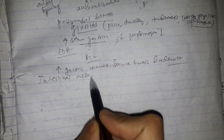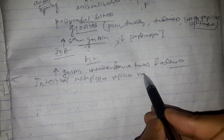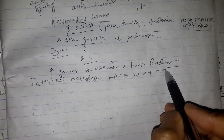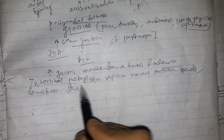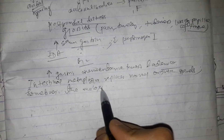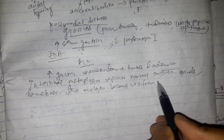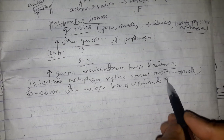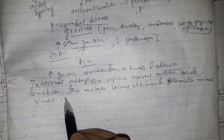Intestinal metaplasia replaces normal oxyntic glands. Sometimes the mucosa becomes villiform and resembles normal small intestine.